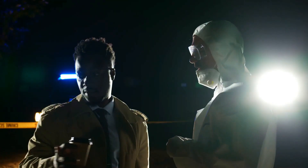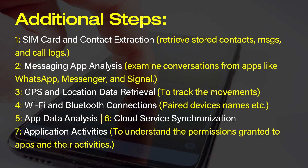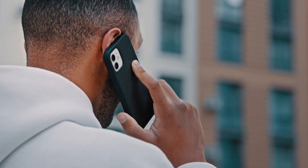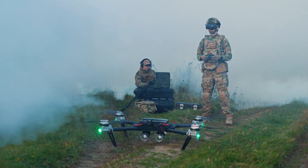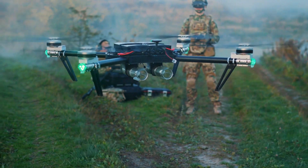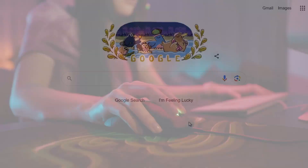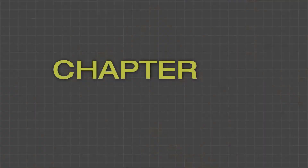Chapter number two: smartphone forensics. If the police found a smartphone instead of a laptop, the forensics team would follow similar steps, with the differences lying in the forensic tools used and some additional steps due to the nature of smartphones — primarily used for communication and personal activities rather than general computing. This approach also applies to other digital devices like cameras, drones, or smartwatches, with some minor differences.